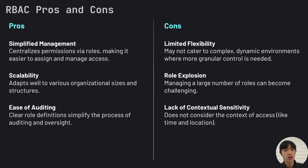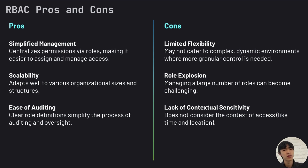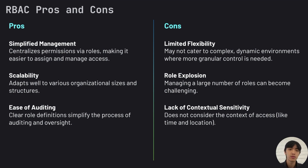But one of the limits of RBAC is its flexibility. For complex and dynamic environments, it's a little bit more difficult to get granular control with RBAC. Another challenge is role explosion, where in larger organizations managing a vast number of roles, it can become really cumbersome and inefficient — you have to manually implement a ton of different checks for each resource. Lastly, it doesn't consider context of the situation — it doesn't consider a user's time or location, which can be pretty crucial. While RBAC offers simplified management, scalability, and ease of auditing, it also presents challenges in flexibility, role management, and context sensitivity.